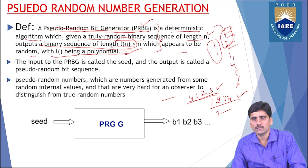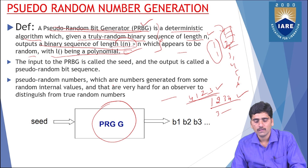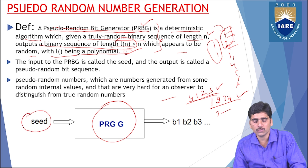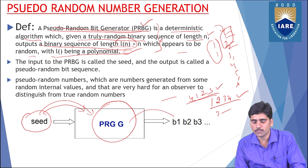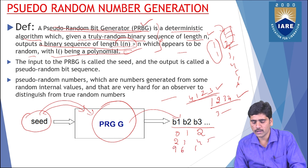The input to the pseudo-random bit generator is called a seed. The seed is applied to the generator, and the output sequence is generated. The output sequence can be something like 0, 1, 2 or 2, 3, 4, 5 or 9, 6, 4, 5 — this is the output sequence of the number generation.